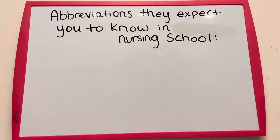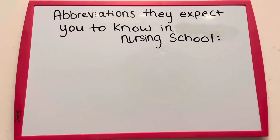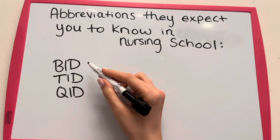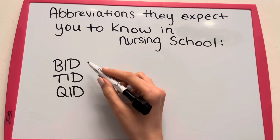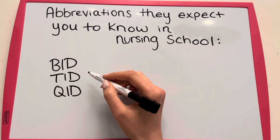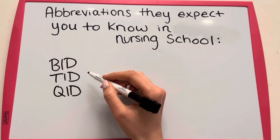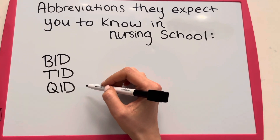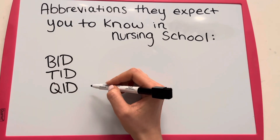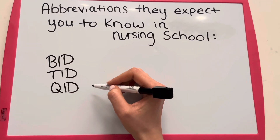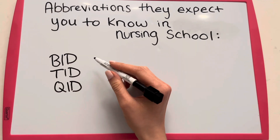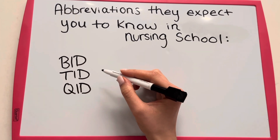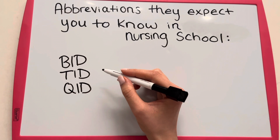Medical abbreviations they expect you to know in nursing school. BID is two times a day, TID three times a day, and QID four times a day. These are used to describe how frequently medications are given, or they can also explain how often a treatment will be performed.